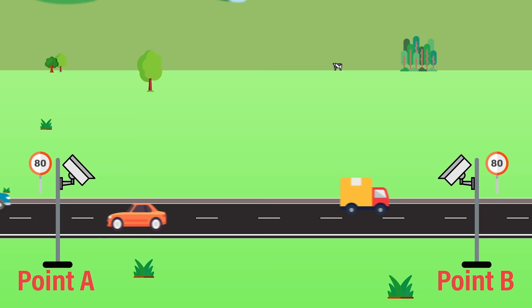Average speed cameras, sometimes called point-to-point cameras, record a vehicle's average speed between two points along a stretch of road.